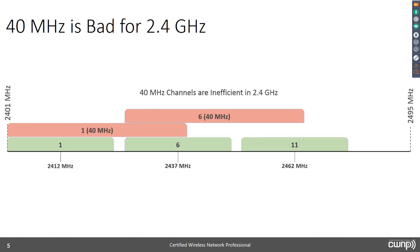Now let's talk about why 40 MHz is bad in 2.4 GHz. If we center a 40 MHz channel on 2412 MHz using channel 1 as the primary, it encroaches all the way up to channel 6. If the primary is channel 6, the secondary 20 MHz block encroaches all the way up to channel 11. As you can see, there's really only enough space in the 2.4 GHz band to run one 40 MHz channel at a time, so you can't implement the staggered multiple channel architecture.